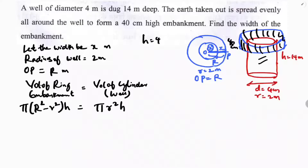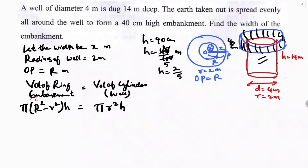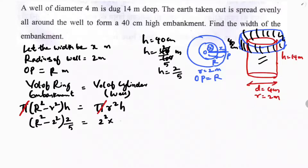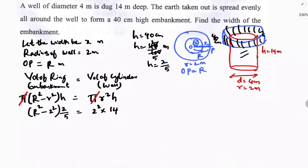40 centimeters in meters is 40/100 = 2/5 meters. So height of embankment is 2/5. Cancelling π on both sides, I substitute: capital R² minus small r² (which is 2²) times height of embankment 2/5 equals radius of well squared (2²) times height 14.